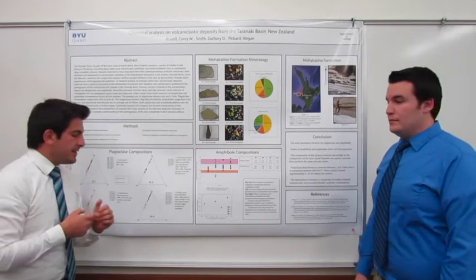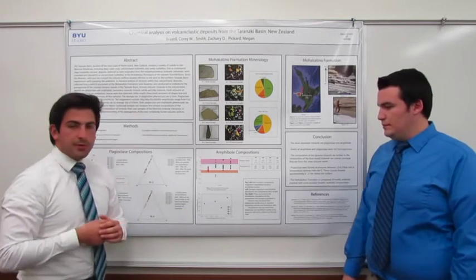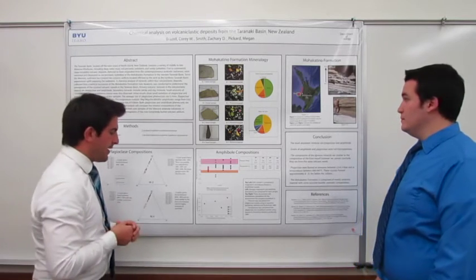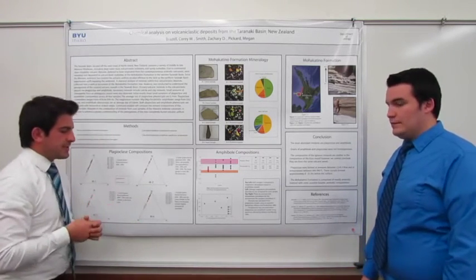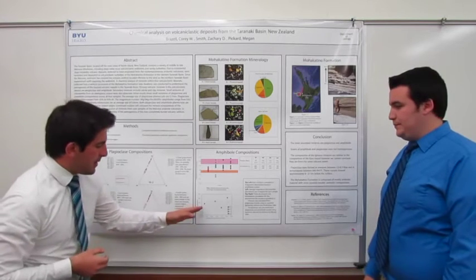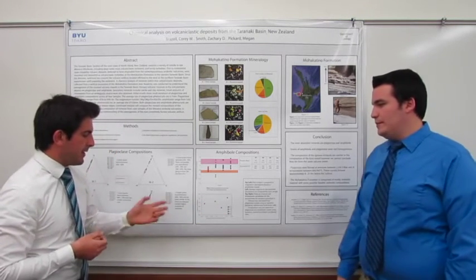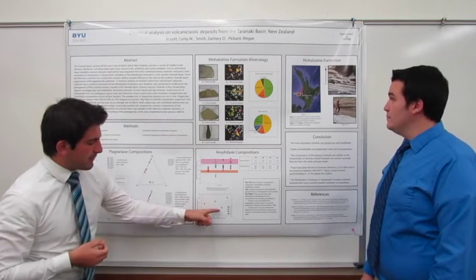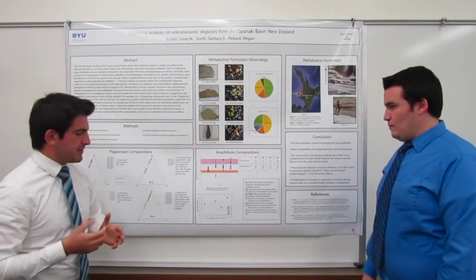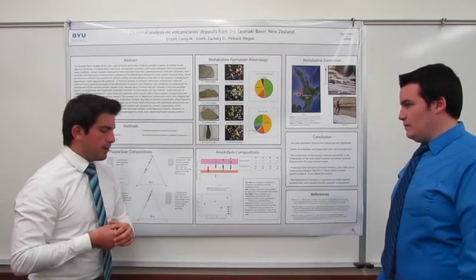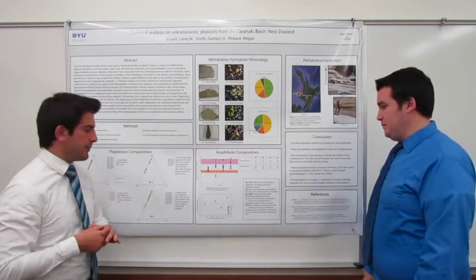We plotted average magnesium number of the amphiboles against average anorthite of the plagioclase. As expected, there is a good trend of increasing average magnesium number with increasing average anorthite. However, we do have one outlier — M3 — which gave us reason to believe there could have been alteration in the plagioclase due to its low anorthite averages.